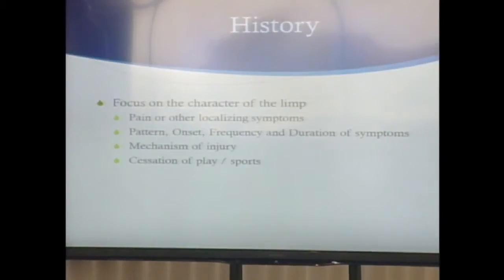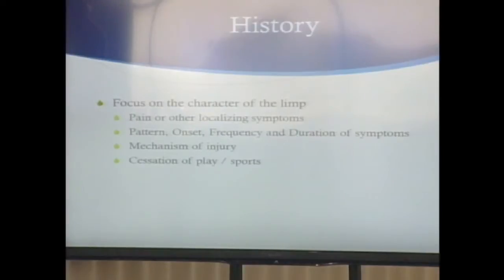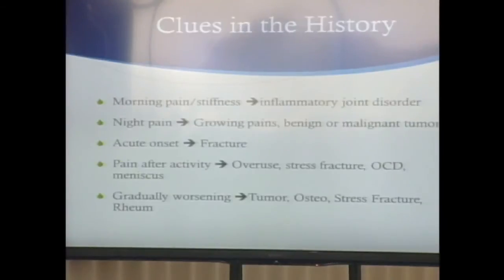In the history, you want to focus on the character of the limp. Is there any pain or localizing symptoms? What's the pattern? When did it start? How often is it — is it all the time or are there certain things that bring on the pain and limp? What was the mechanism of injury if there was one? And is the patient still playing sports — are they playing through pain or have they completely stopped?